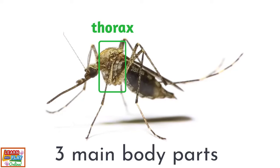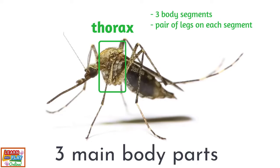Moving on to the thorax. This is where you will find three body segments and a pair of legs for each of the segments. Mosquitoes have just one pair of wings which is located on the middle segment.